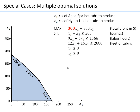When we solved our blue-reach hot-tab problem, we obtained a unique optimal solution. However, there are some special cases in linear programming, and one of them is that we might have more than one optimal solution for a given problem.